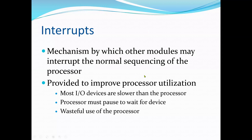The mechanism by which other modules may interrupt the normal sequence of the processor is known as an interrupt. All computers provide a mechanism by which other modules such as input/output or memory may interrupt the normal sequence of the processor. Interrupts are provided primarily as a way to improve processor utilization.